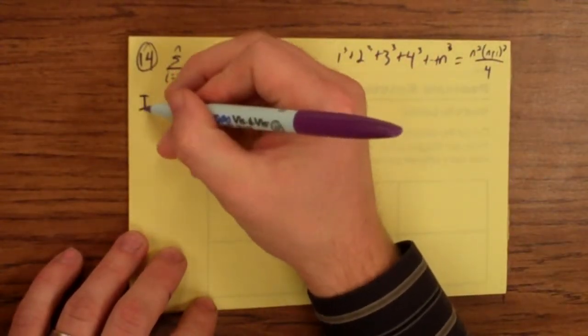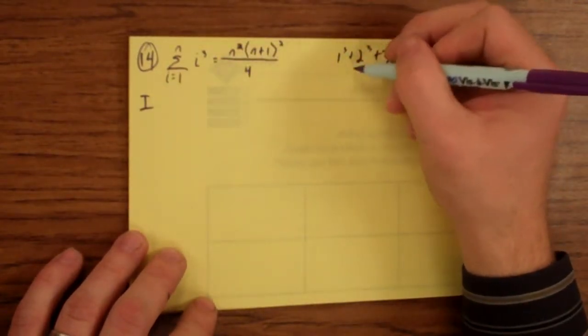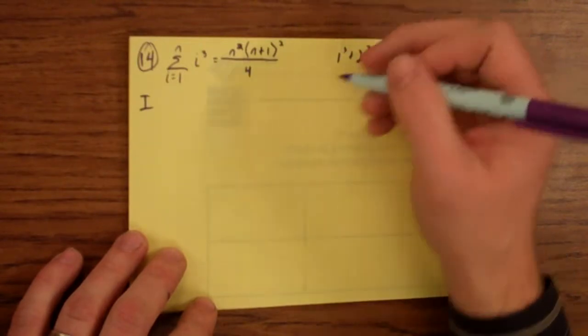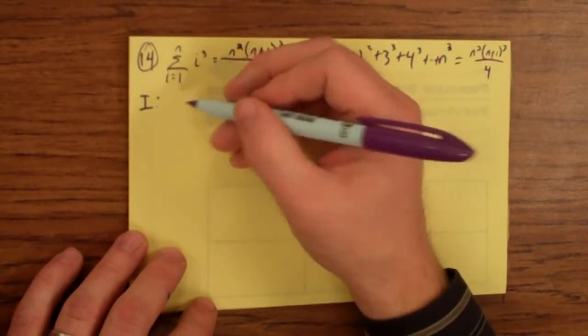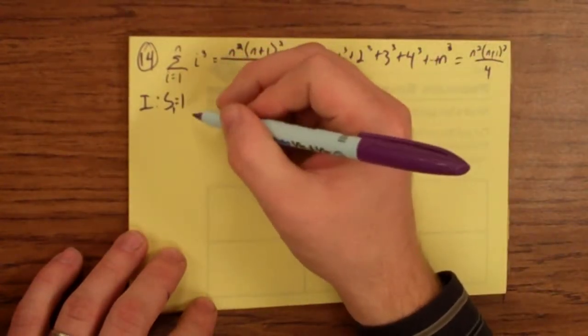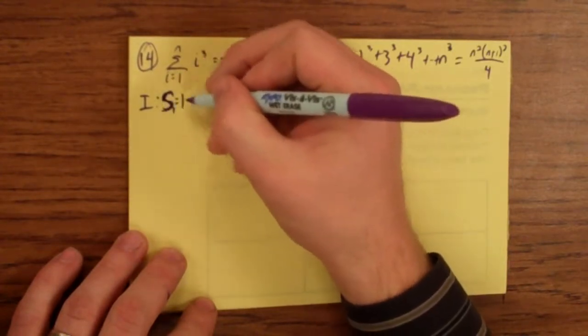The first part of induction is show that it works for the first case. The first case is the sum of the first 1 cubed integer. The sum of this is just 1 plus nothing. The sum of the first 1 cubed number is 1.